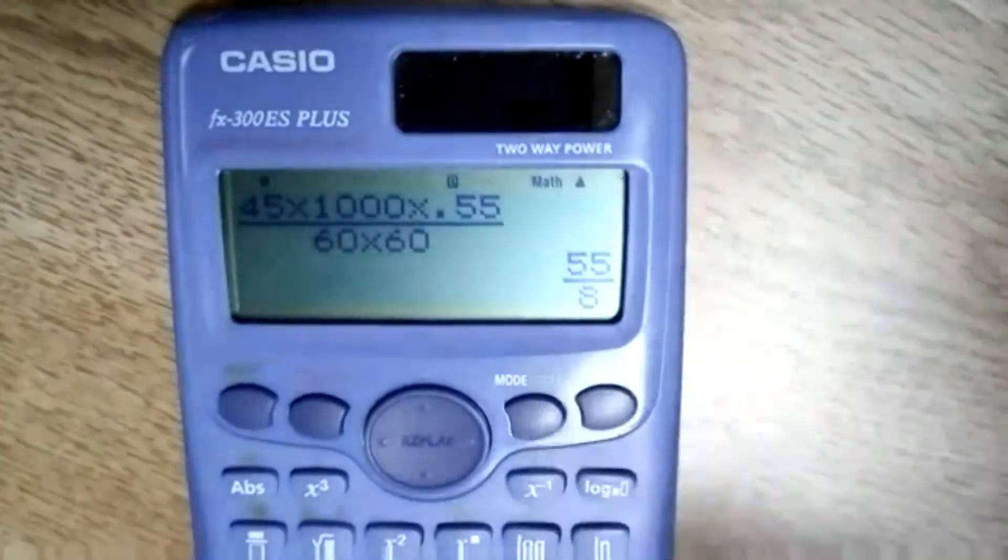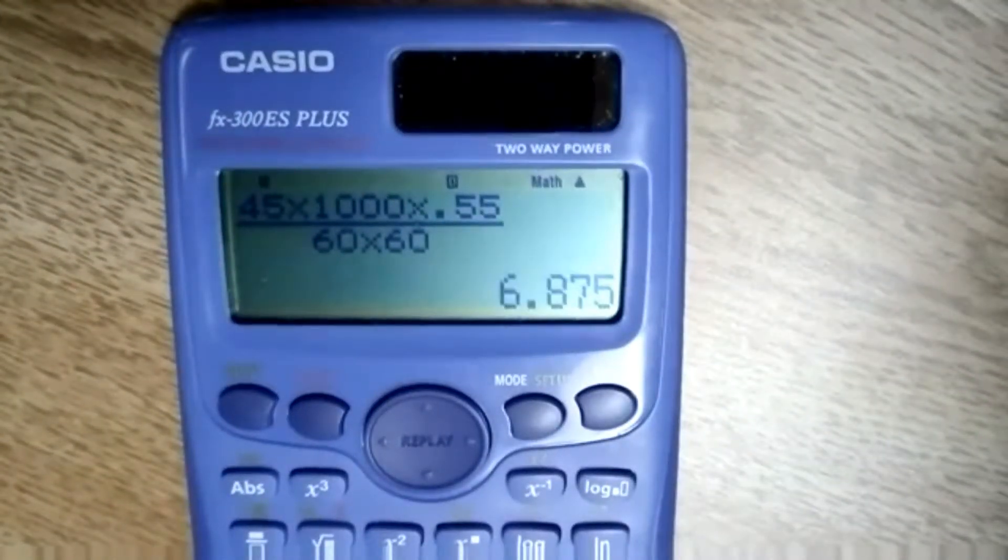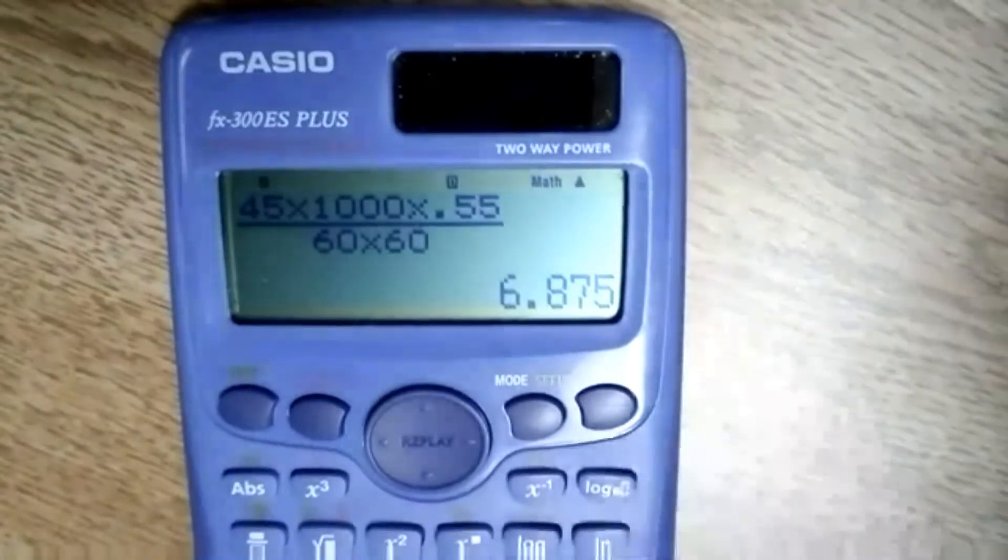For the Casio, they'll do a fraction, but you hit the SD key, and that will convert it to 6.9 meters. That's how you get it using the fraction key.